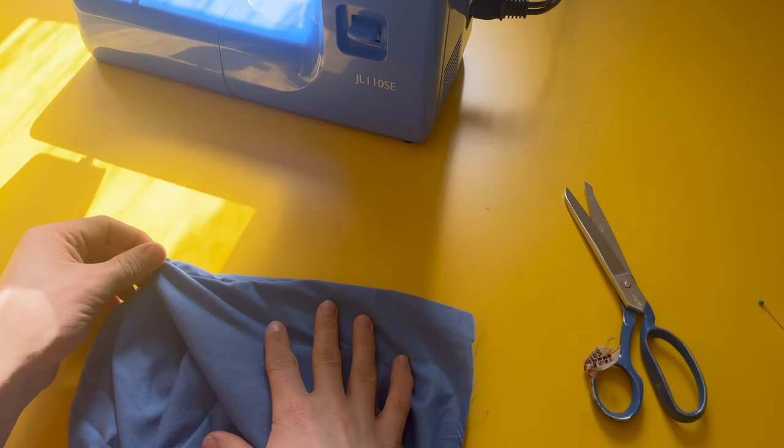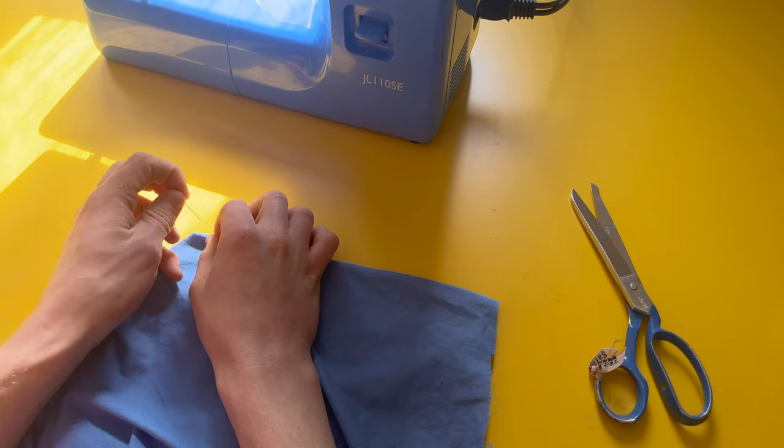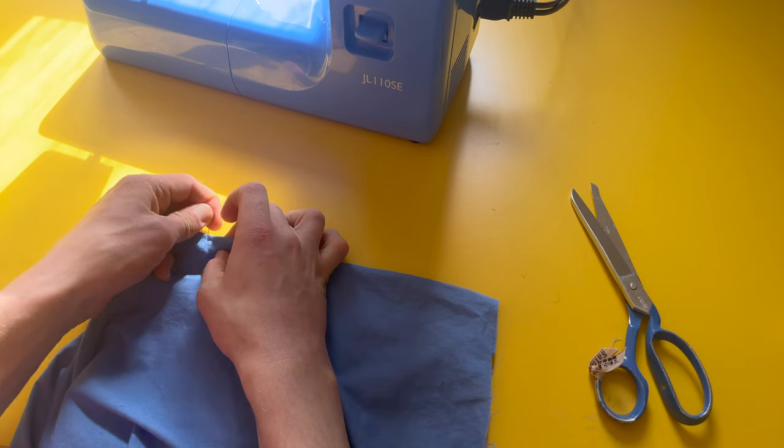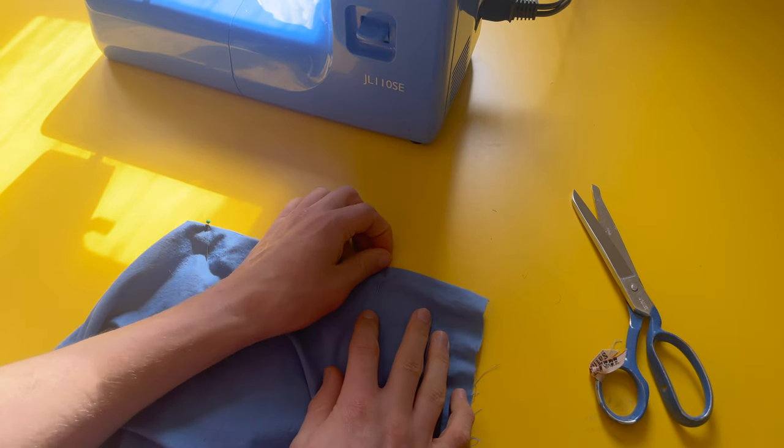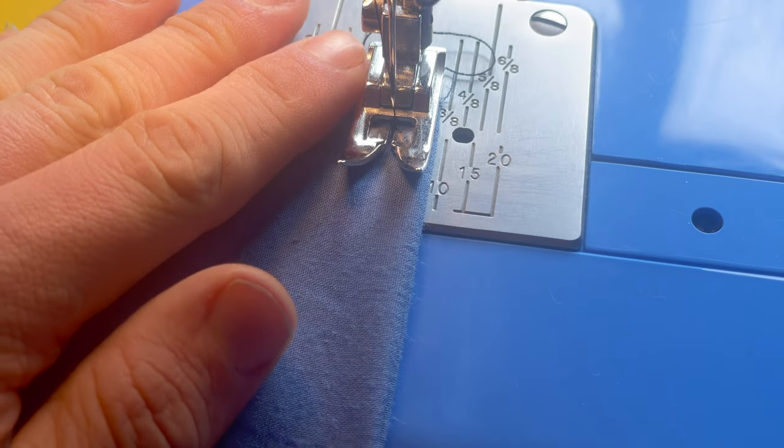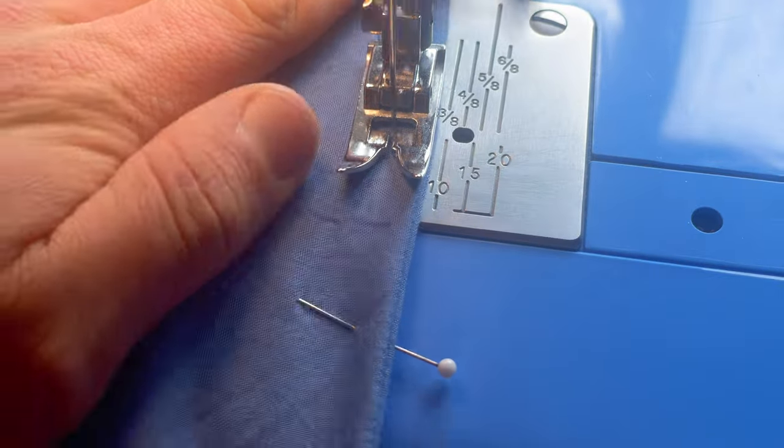Invert the sheet then for each corner flatten along the seam and pin. This time run a stitch 5 millimeters from the edge.